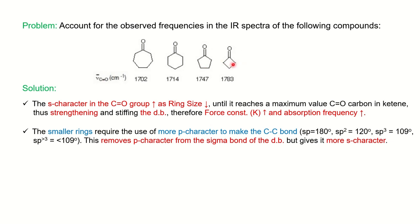You can mention that the smaller ring requires more p-character to make the C-C sigma bond of the ring. For linear molecules you have 180 degrees with sp hybridization. As the ring size decreases from 180 to 120 degrees, p-character increases to sp², and as the size further decreases to 109 degrees, it becomes sp³.